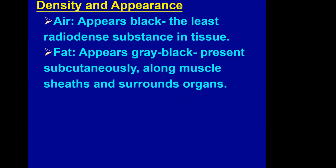Let's look at the effects of tissue density on the radiograph. Air will appear black on the film or on the visual display because air is the least radio-dense substance. Fat appears somewhere between gray and black; it is present subcutaneously, along muscle sheaths, and surrounding organs.